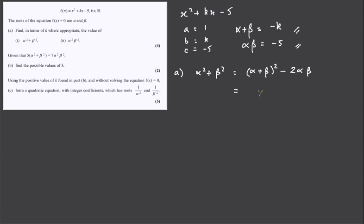So we have minus k squared here, minus 2 lots of minus 5, and if we sort that out, k squared plus 10.